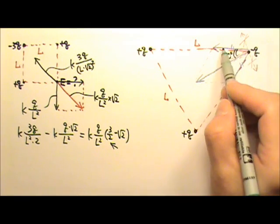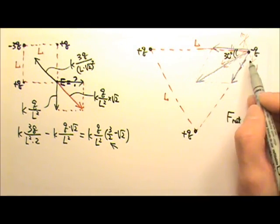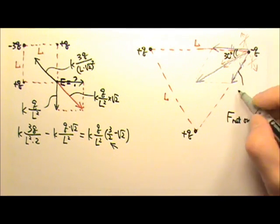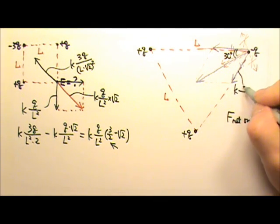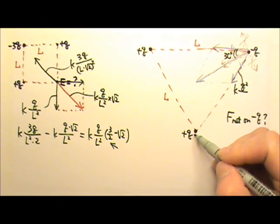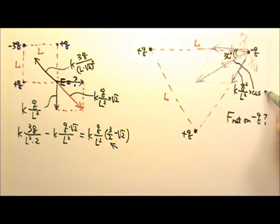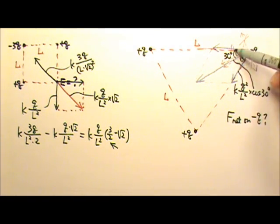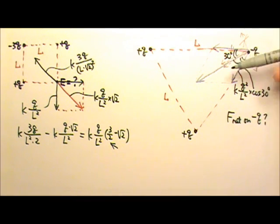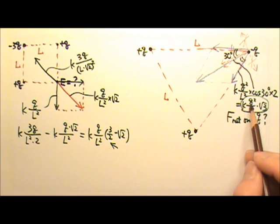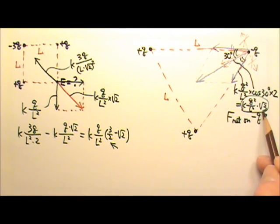We first find the force between two charges: F equals k times q squared over l squared. The component along the symmetry direction is F times cosine 30 degrees. Both forces contribute the same component along that direction, so we multiply by 2, giving a net force of 2 times kq squared over l squared times cosine 30, which equals kq squared over l squared times root 3.